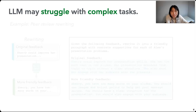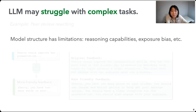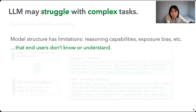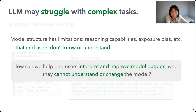Now, if you work on NLP or text generators, you can probably guess what went wrong. Basically, there are some limitations in the modeling structure — the model doesn't really know how to do reasoning, and it starts to get biased by its own generations as the context becomes longer. If you don't work on this, don't worry, because end users also don't know what I'm talking about — but they are the users of these models. So we need to answer this question: how can we help end users interpret and improve model outputs when they don't understand the underlying structure and also cannot change the model?